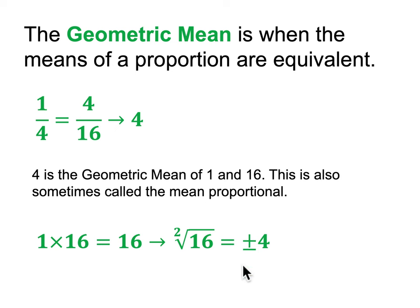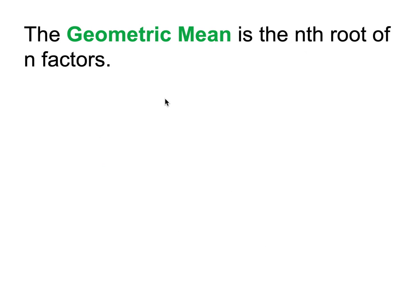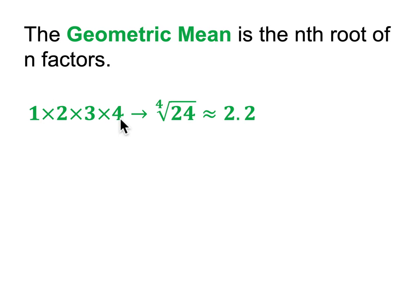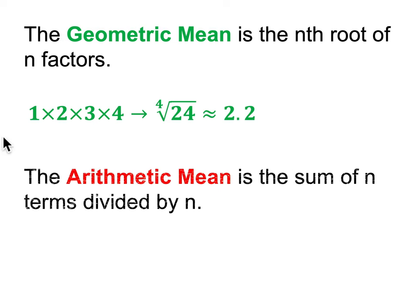Both positive and negative 4 work as geometric means — negative 4 is also a square root of 16, just not used in this given example. Now, if you had four numbers — say the geometric mean of 1, 2, 3, and 4 — you multiply them: 1 times 2 times 3 times 4 is 24, so it's the 4th root of 24, which is about 2.2. We'll talk more about what this means, but this is the formulaic way of thinking about it.